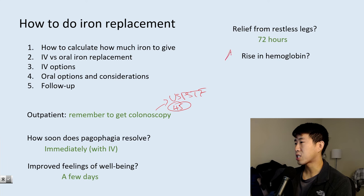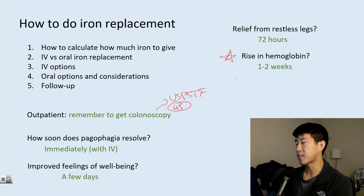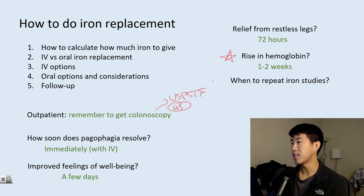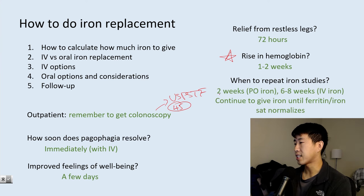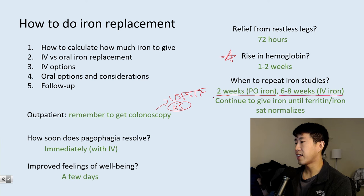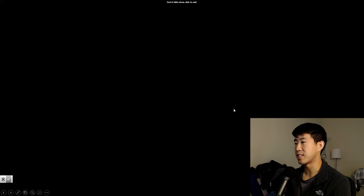A rise in hemoglobin, if the patient had anemia, is expected within one to two weeks. For repeat iron studies: check again in two weeks if the patient was started on oral iron, or six to eight weeks if they received IV iron. Continue giving iron until ferritin and iron saturation normalize.